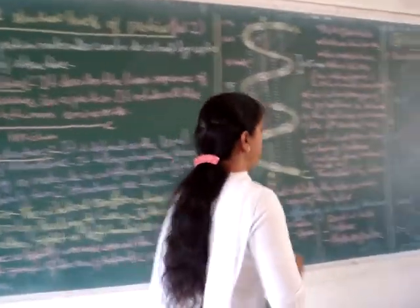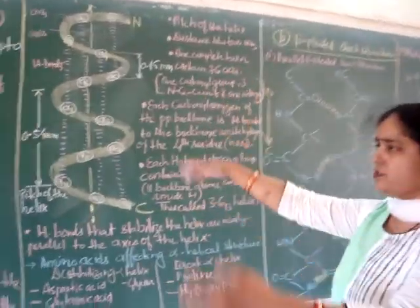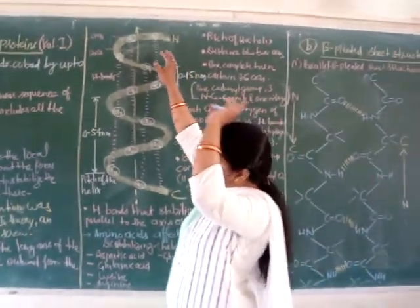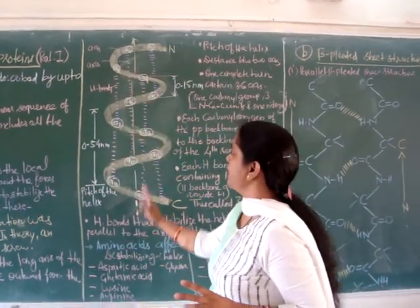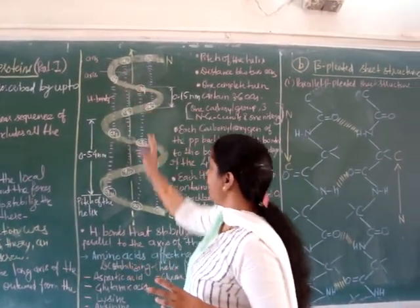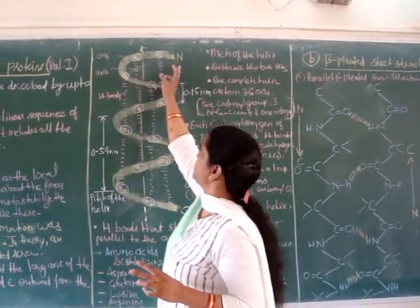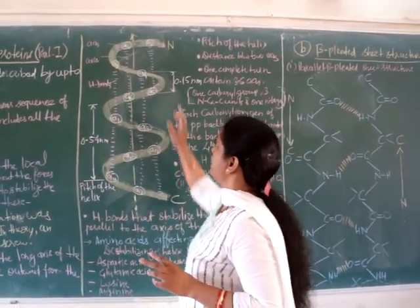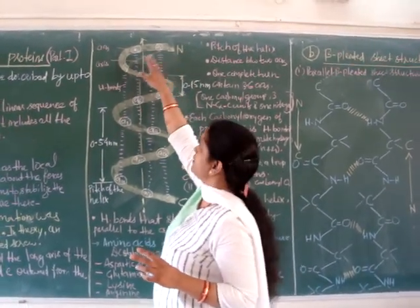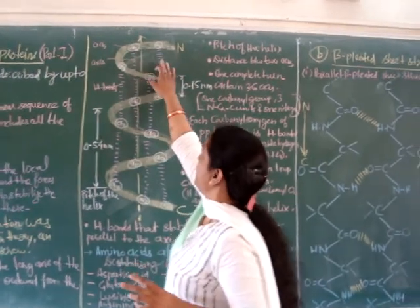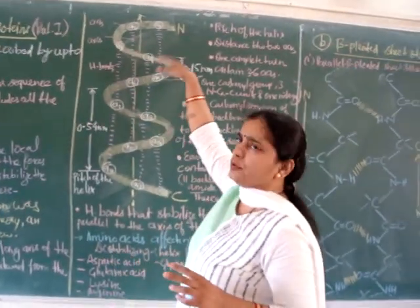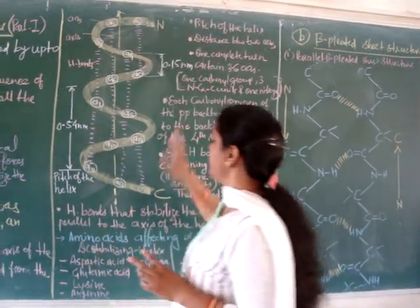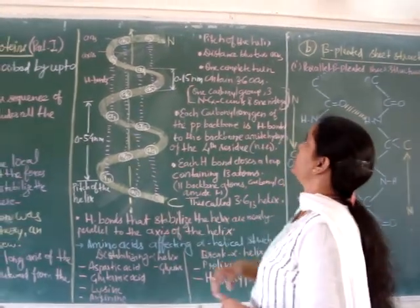Here I will explain the structure of alpha helix using a diagram. This central line represents the axis, and the polypeptide chain is wound around it in a right-handed manner. The amino acids A1, A2, A3 show the sequence along the chain, with the N-terminus at one end and the C-terminus at the other.